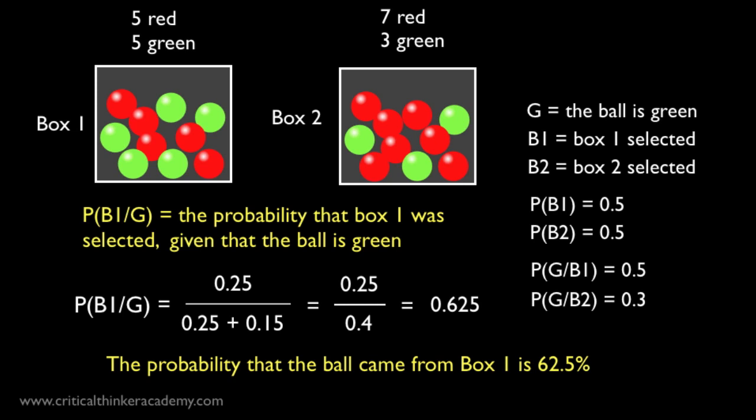Now, after having come to know the color of the ball, we can revise the probability of the hypothesis and see that it's more likely that the ball came from box 1 than from box 2. Which is exactly what we would expect given the proportions of green and red balls in the boxes.